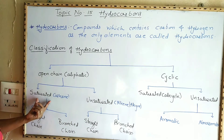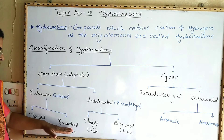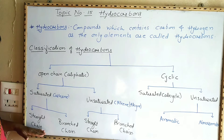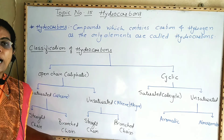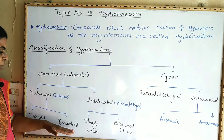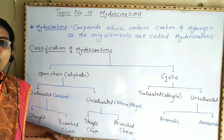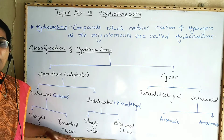Now saturated hydrocarbons, that is alkanes, are of two types: straight chain hydrocarbons and branched chain saturated hydrocarbons. In straight chain saturated hydrocarbons there is a straight chain of carbon atoms in the molecule.